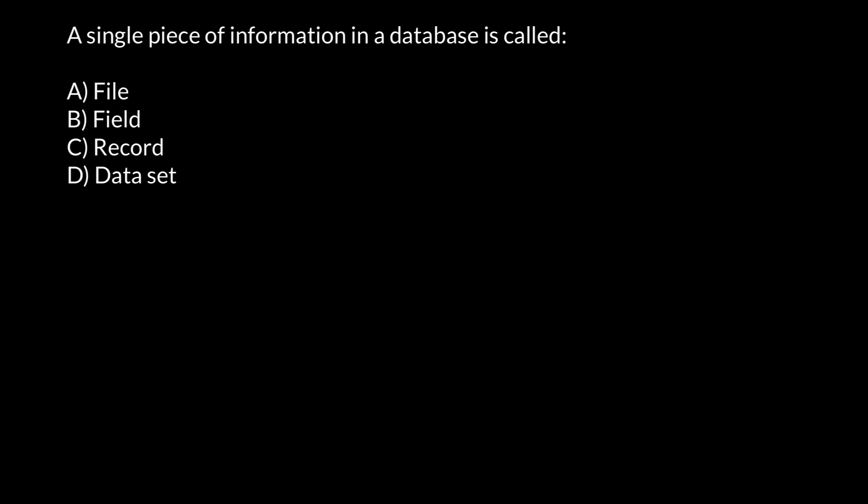Hello and welcome to Nikolai's genetics lessons. In this video I'm going to talk about bioinformatics. Here is a question: a single piece of information in the database is called — and right away we can cross out answer D, 'data set,' because according to our question we are looking for a single piece of information, and 'set' means many pieces of information.